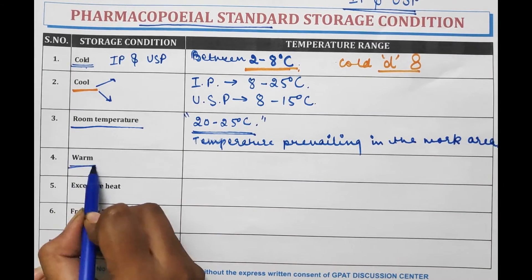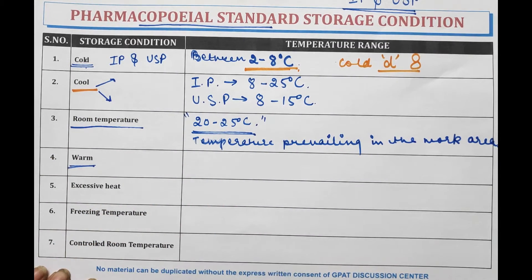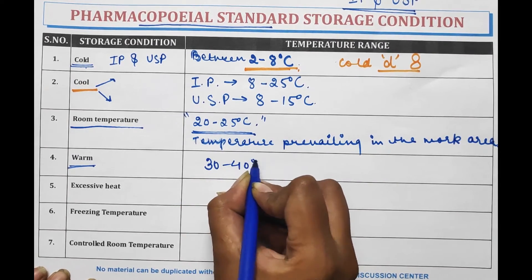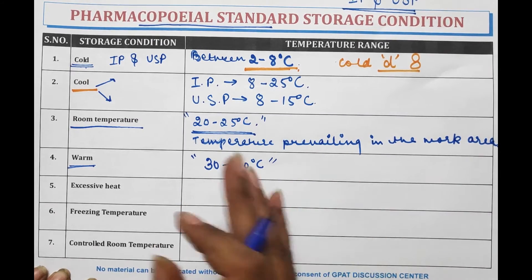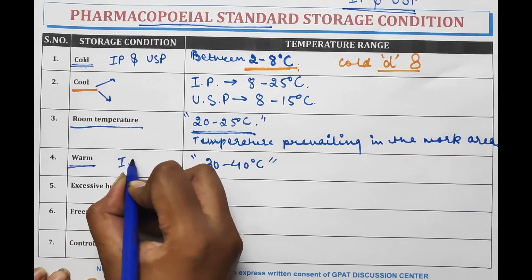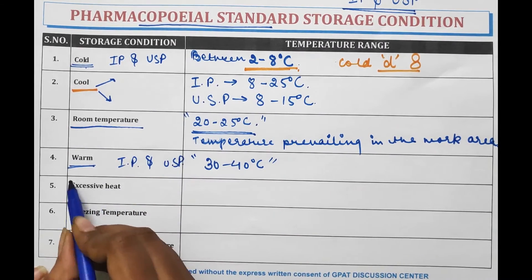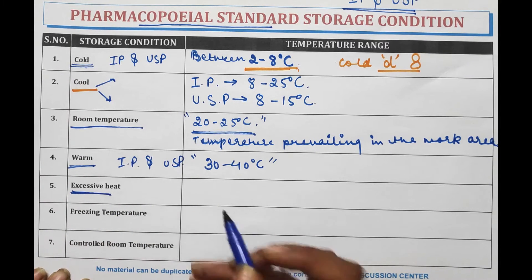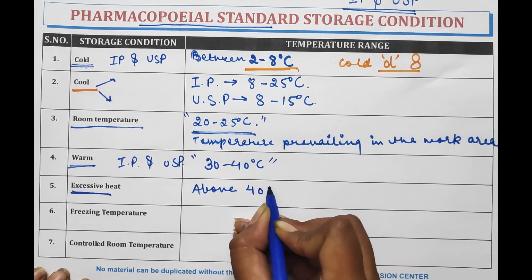Warm storage condition means the product should be stored between 30 to 40 degrees Celsius. This condition is the same for both IP and USP. Excessive heat means that the pharmaceutical product should be stored at a temperature above 40 degrees Celsius.